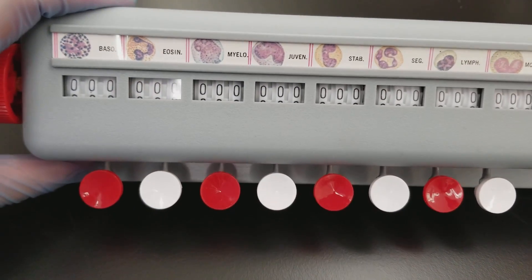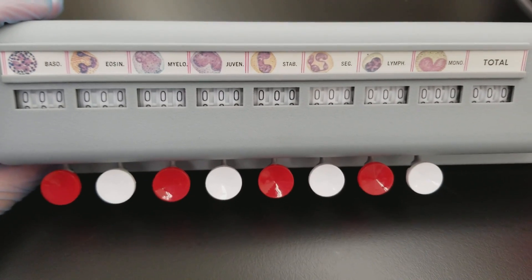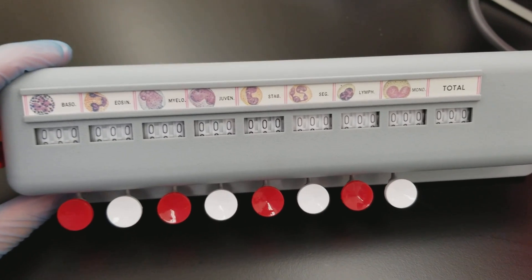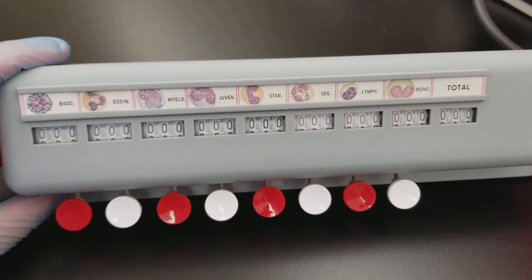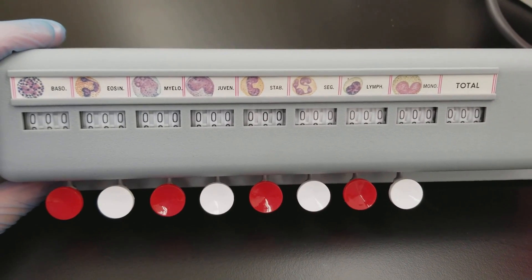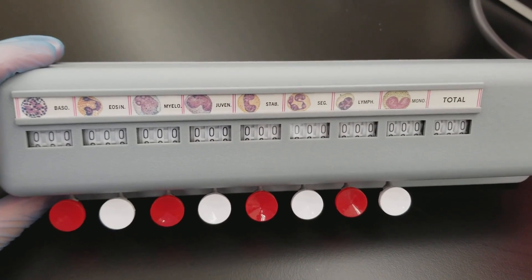But you may see the immature white blood cells only in the thick area. So make sure that you scan the entire smear before you start your count in an area where red cells are spaced out nicely.